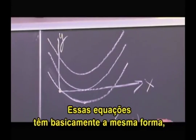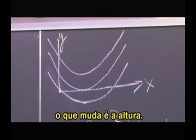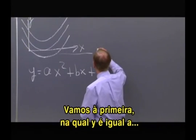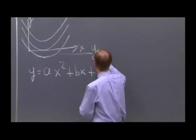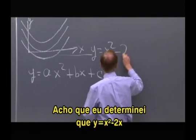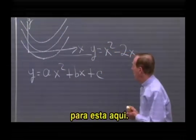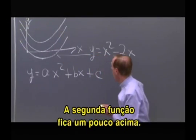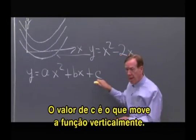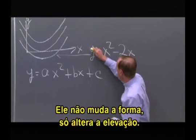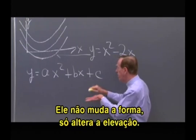You see that those quadratics are just almost the same shape, just lifted up. So this first one is going to be y equals x squared minus 2x. The c is what moves it up and down — that's the easy part. It doesn't change the shape, it just shifts it up.